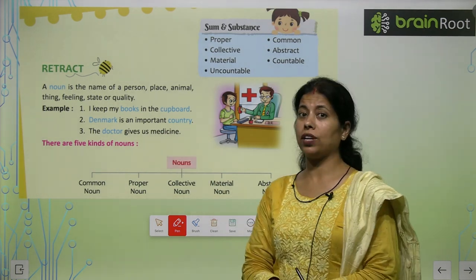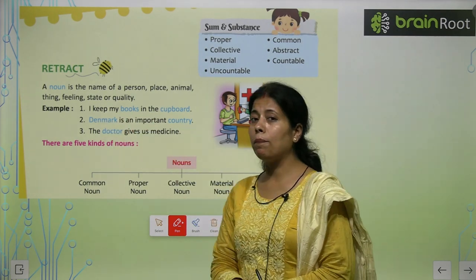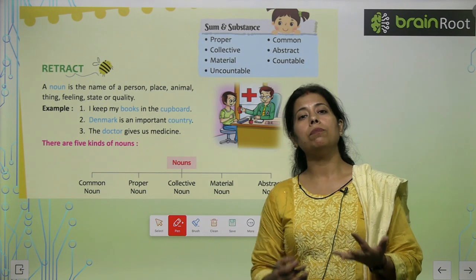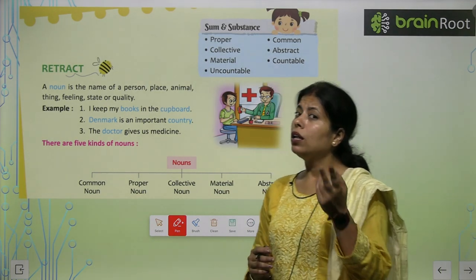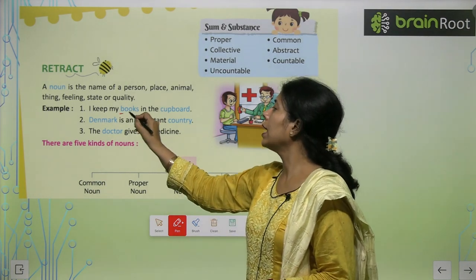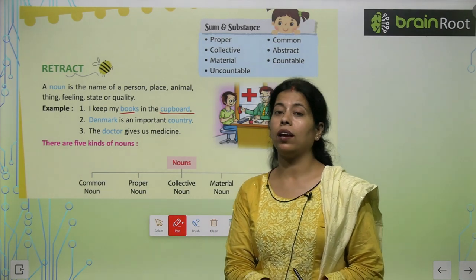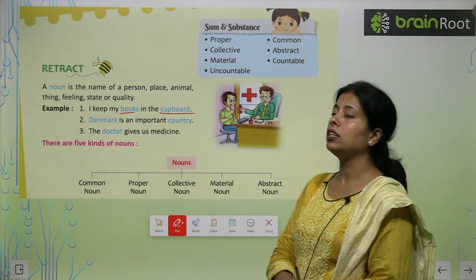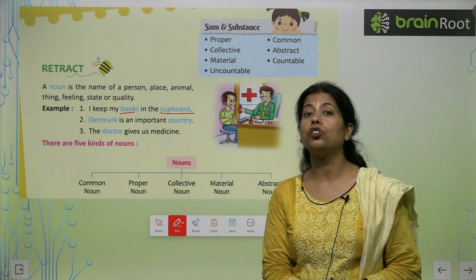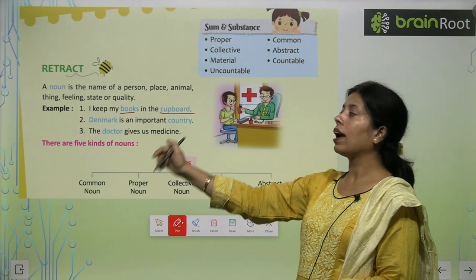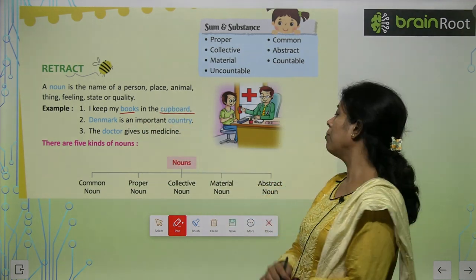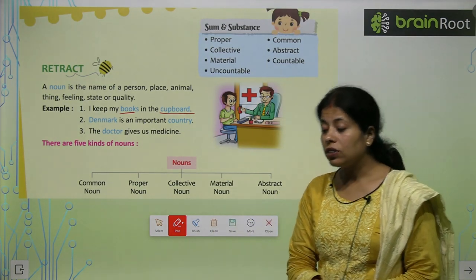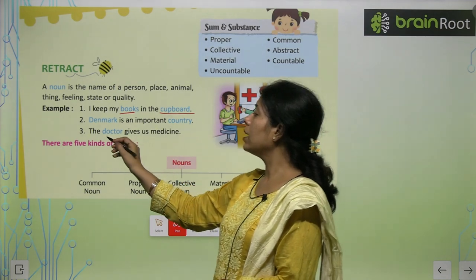Example से और clear हो जाएगा। 'I keep my books in the cupboard.' यहाँ पर books और cupboard — दोनों noun हैं, किसी thing के नाम हैं। 'Denmark is an important country.' यहाँ Denmark और country noun हैं। 'The doctor gives us medicine.' — doctor is a noun. तो today we will read the kinds of noun.